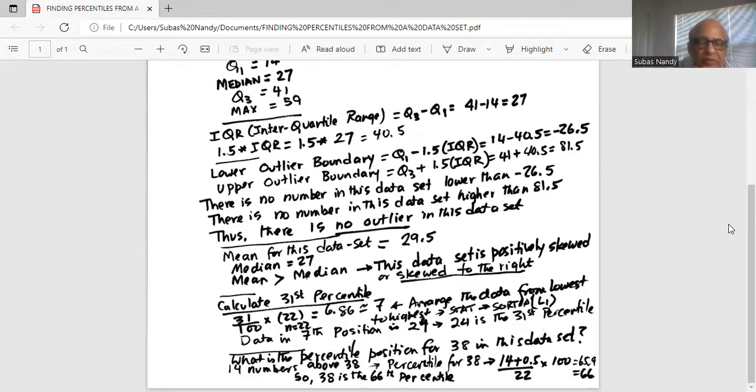The percentile position for 38 is 14, because 14 numbers are above 38. And 14 plus 0.5, so it is 14.5 divided by 22.